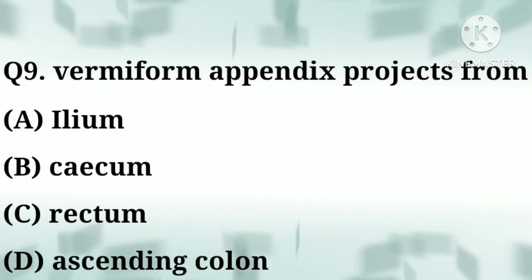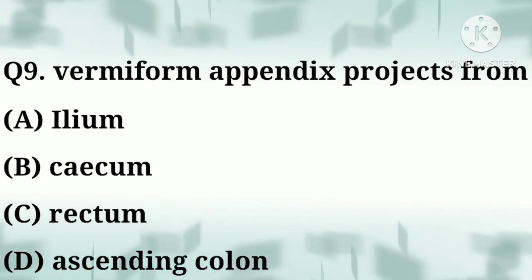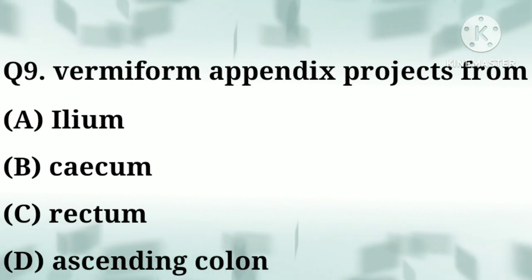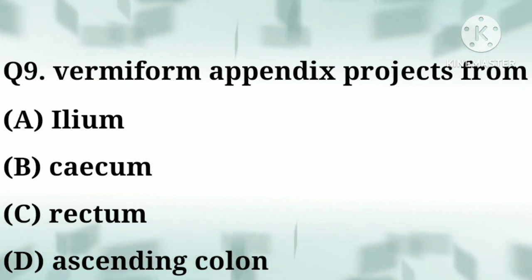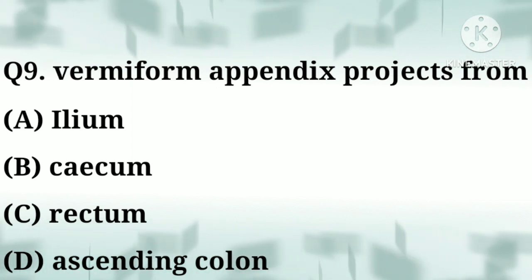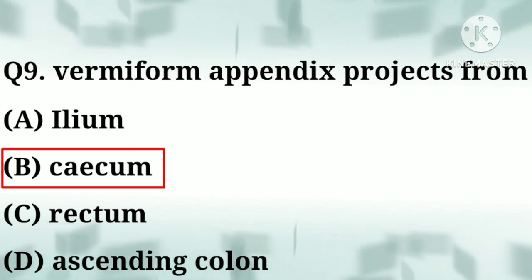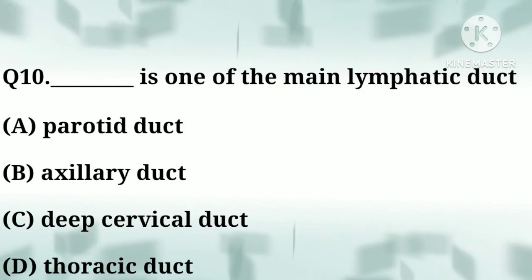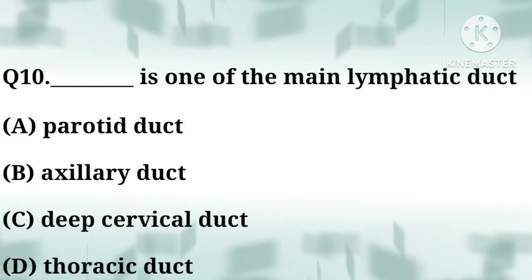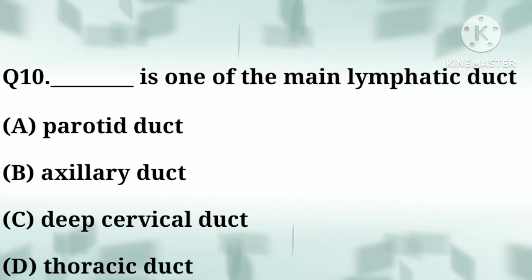Question number nine: the vermiform appendix projects from — option A: ileum, option B: cecum, option C: rectum, option D: ascending colon. Correct answer: option B, cecum. Question number ten: blank is one of the main lymphatic ducts.